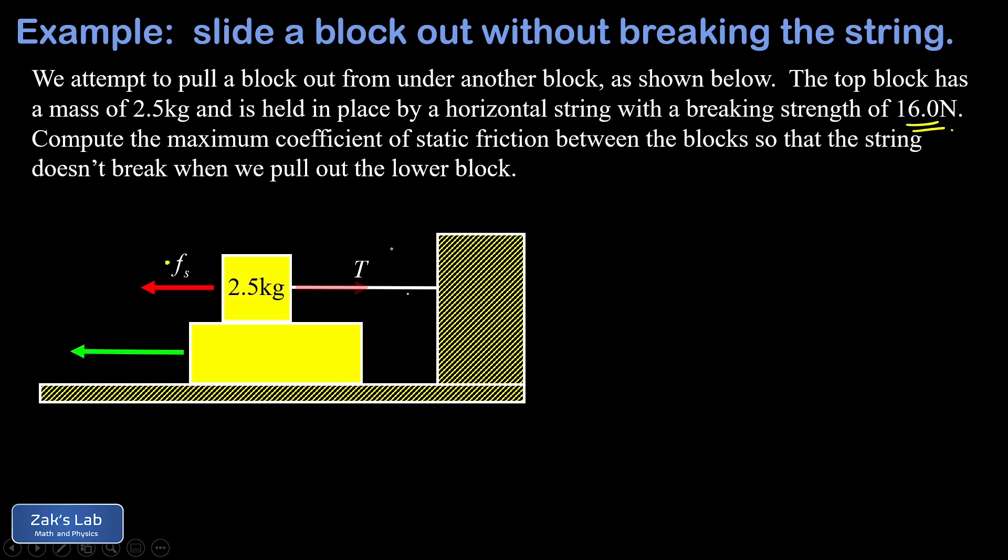Again, this is a completely static problem, so we can say that the static friction force on the 2.5 kilogram block is equal to that tension pulling to the right. Now what we want is for our block to begin slipping right as